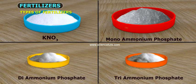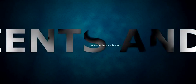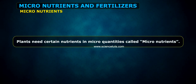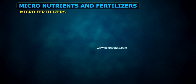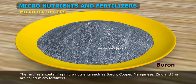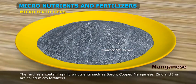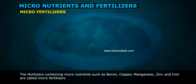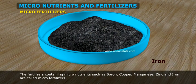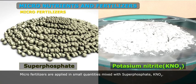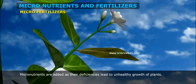Micronutrients and fertilizers: Plants need certain nutrients in micro quantities called micronutrients. Micro fertilizers are fertilizers containing micronutrients such as boron, copper, manganese, zinc, and iron. They are applied in small quantities mixed with superphosphate or KNO3.